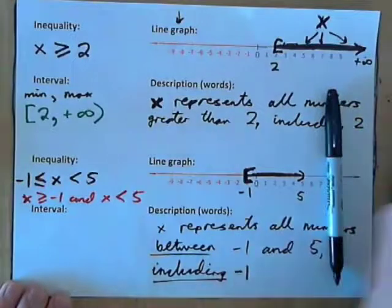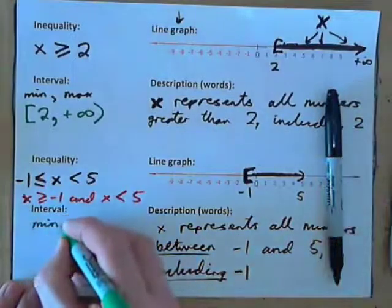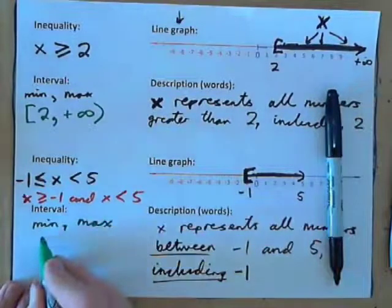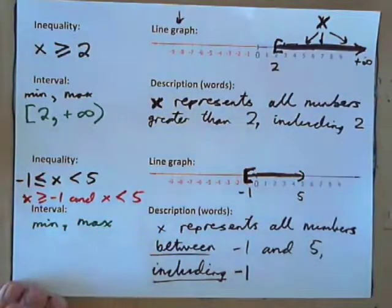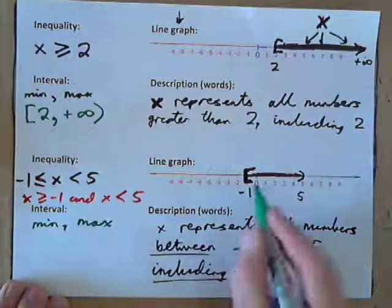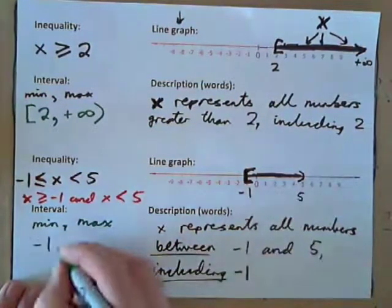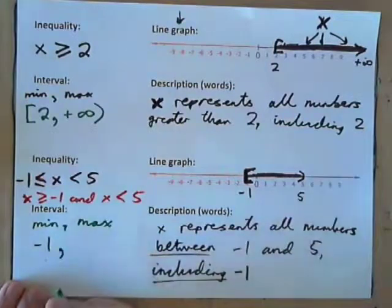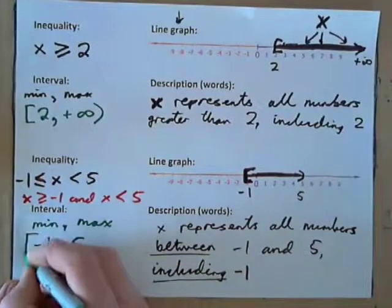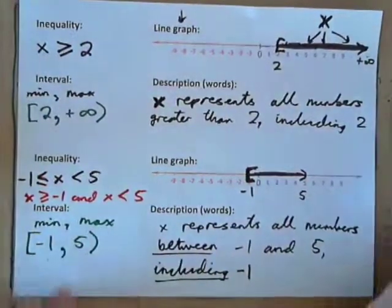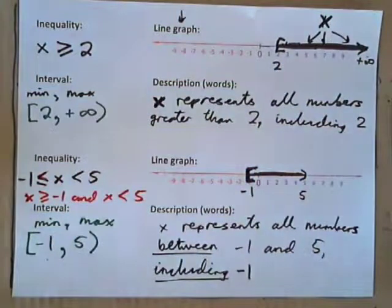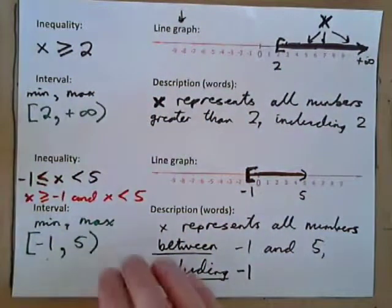As an interval, it is written min, comma, max. The minimum number in the set is negative 1, the maximum number is 5. Negative 1 is included, so put bracket. 5 is not included, put parenthesis.